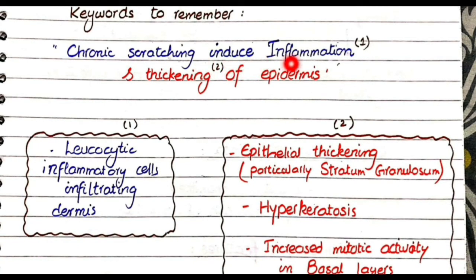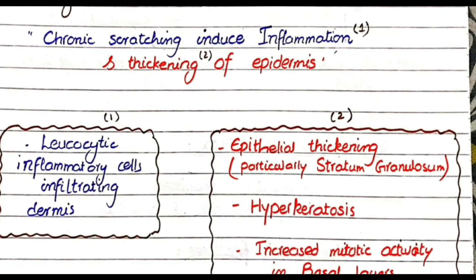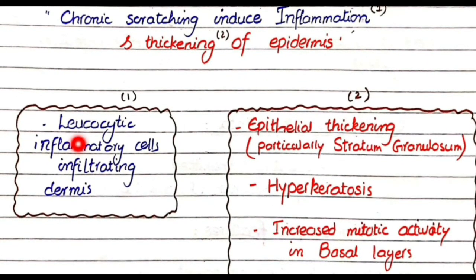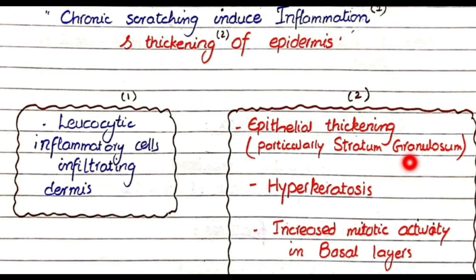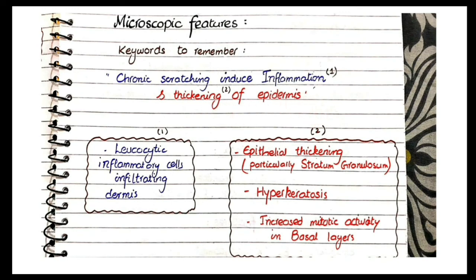For microscopic features of lichen simplex chronicus, the keywords are chronic scratching-induced inflammation and thickening of epidermis. Unlike lichen sclerosis where inflammatory cells destroy the epidermis causing thinning, lichen simplex chronicus develops as a protective response resulting in thickening of epidermis. You will see leukocytic inflammatory cells infiltrating the dermis, epithelial thickening particularly of the stratum granulosum, hyperkeratosis — increased width of the keratin layer — and increased mitotic activity in the basal layer due to rapid epidermal proliferation.